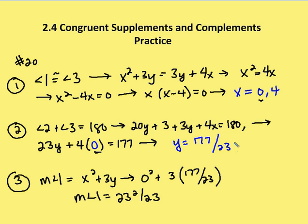Now I can find the measure of angle 1. With x equal to 0 and y equal to 177 over 23, I plug in 0 for x, giving 0 squared plus 3 times 177 over 23, and I get that the measure of angle 1 is equal to 23 and 2 thirds. So that's the value for the measure of angle 1 when x equals 0.